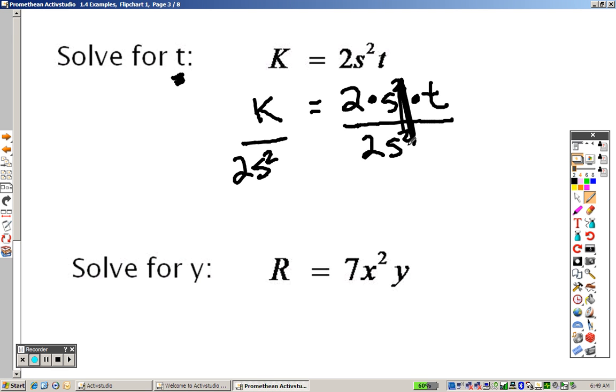So by doing that, that's gone, that's gone, leaving T by itself. So our final answer is T equals K over 2S squared.